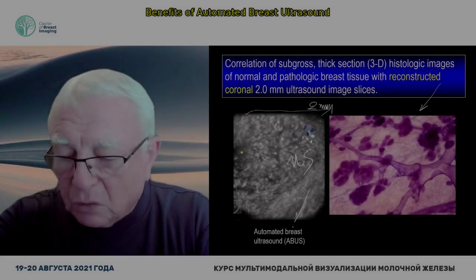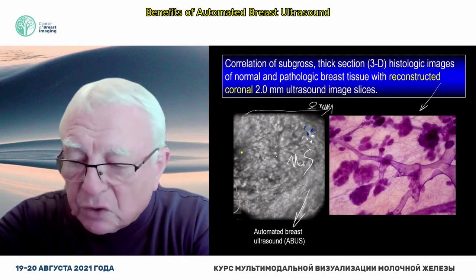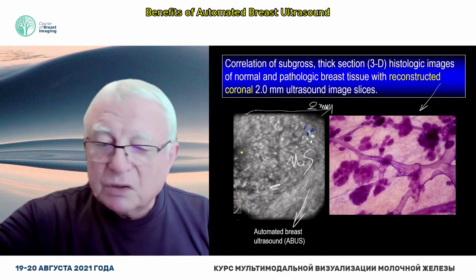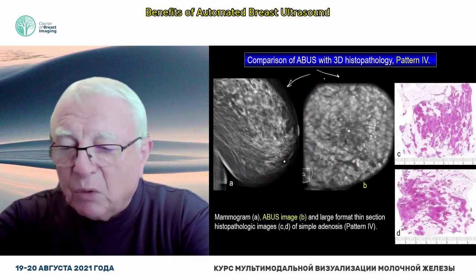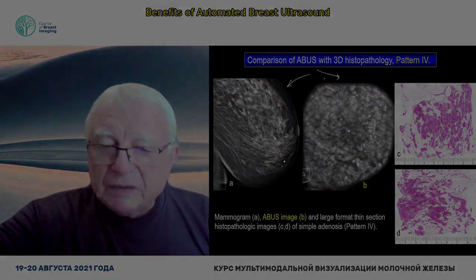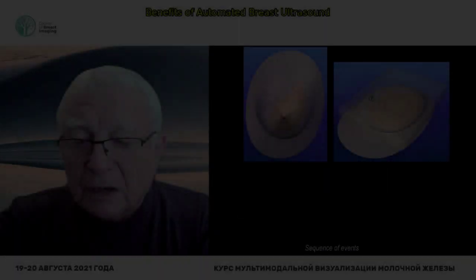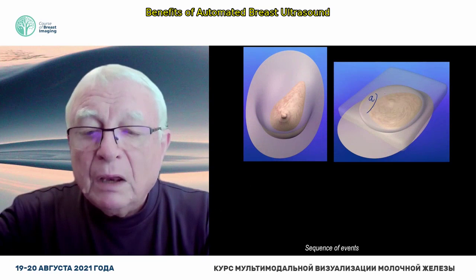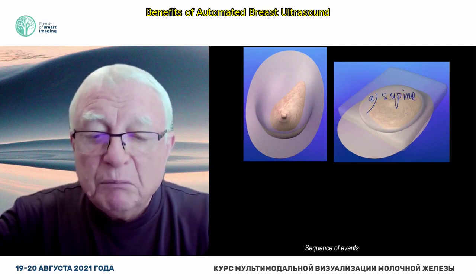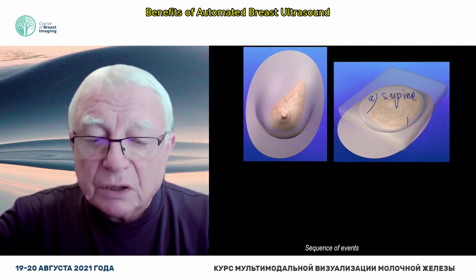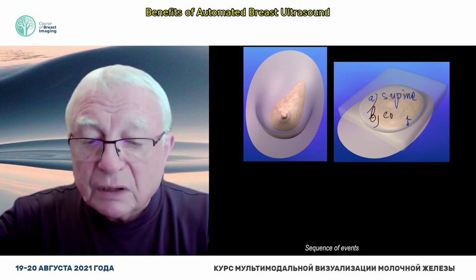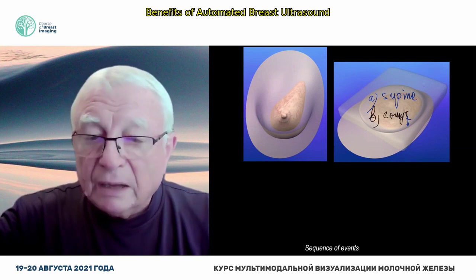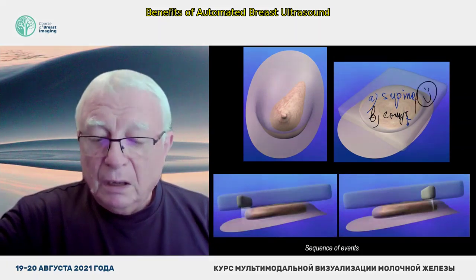With ultrasound — that's automated breast ultrasound — I can see the TDLUs, I can see the fat, and I can see the ducts. You can hardly make a distinction between which one is the mammogram and which one is ultrasound. She's lying supine, which makes the fibroglandular tissue thinner, and the second thing is that we are compressing — and that's what ultrasound likes.